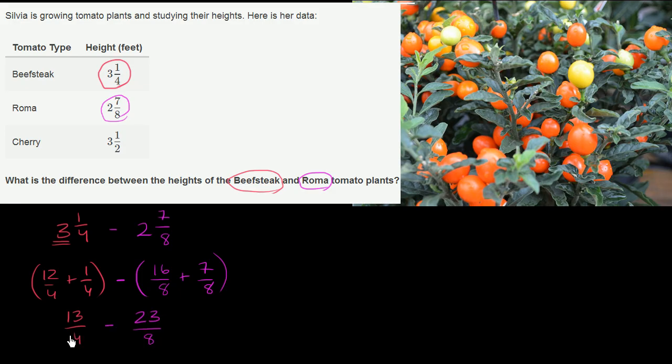Now, we're subtracting one fraction from another, but we have different denominators. So we can't make sense of this until we have the same denominator. And so what is the least common multiple of these two denominators of both 4 and 8?